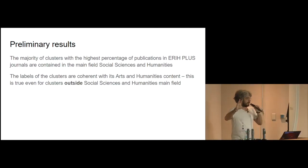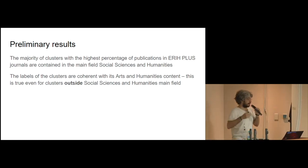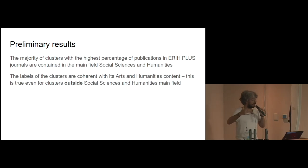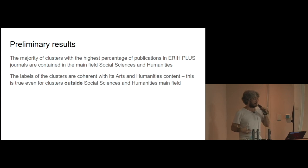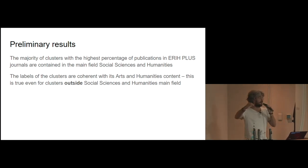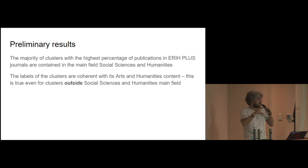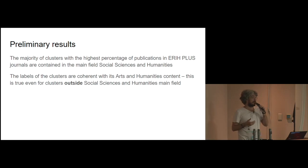To wrap up, these are the preliminary results. The majority of clusters showing the highest percentage of publications in ARI+ journals are included in the main macro area of social sciences and humanities. But there are exceptions: some clusters not belonging to social sciences and humanities as a macro area still contain enough humanities publications, and their journal labels appear compliant with social sciences and humanities fields.